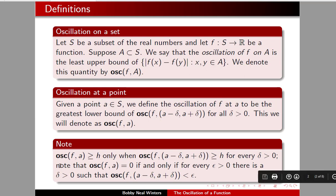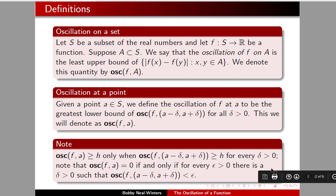One thing that will come in handy: note that the oscillation of f at a is greater than a number h only when the oscillation of f on (x - δ, x + δ) is greater than or equal to h for every δ > 0. Also note that the oscillation of f at a equals 0 if and only if for every ε > 0 there is a δ > 0 such that the oscillation of f on (x - δ, x + δ) is less than ε.